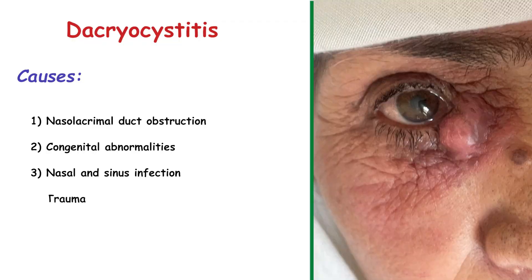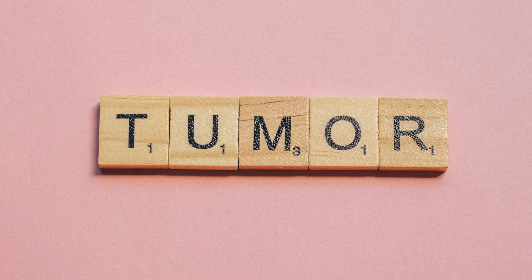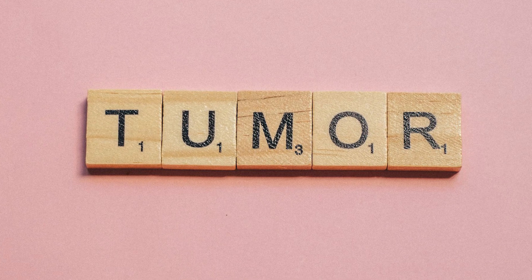Injury to the nasolacrimal duct can lead to scarring and obstruction. Finally, tumors — growths in the tear drainage system — can block the duct.